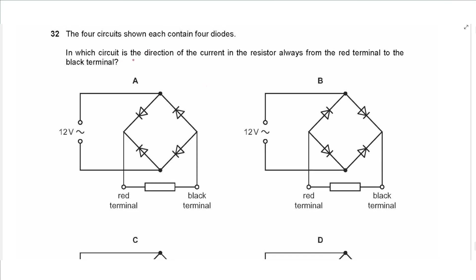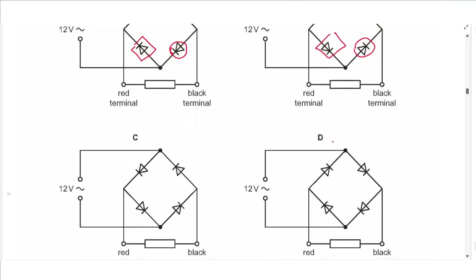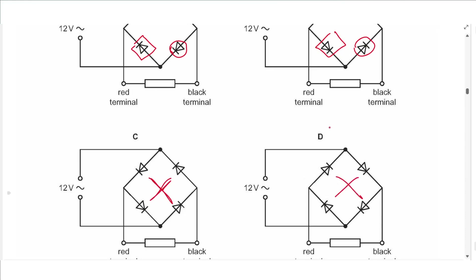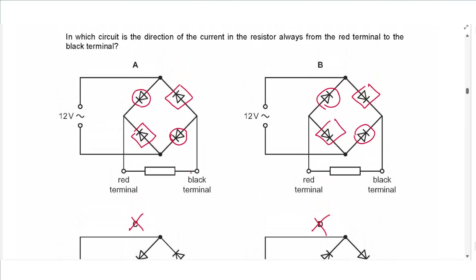Question 33: Four circuits each contain four diodes. We need the current in the resistor to always flow from the red terminal to the black terminal — a full-wave rectifier. In a full-wave rectifier, opposite diodes must point in the same direction. Circuit A satisfies this. In circuit B, the diodes point in the opposite direction, preventing current from reaching the correct terminal. The answer is A.